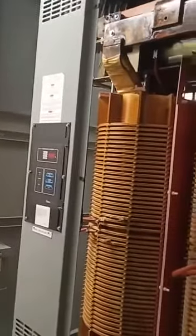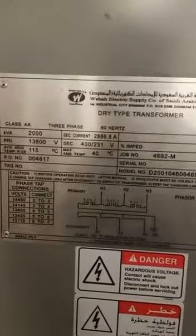Hello friends, in this video I am going to explain how to perform voltage ratio test for medium voltage dry-type transformer. The transformer rating is 2000 kVA and the primary side is 13.8 kV and the secondary is 400 volt.